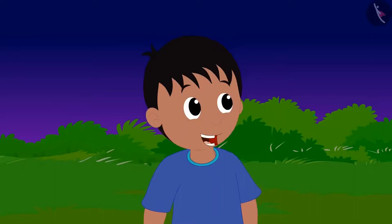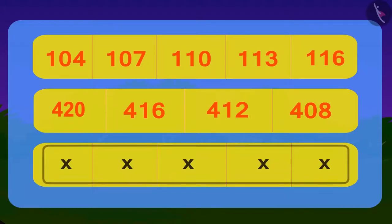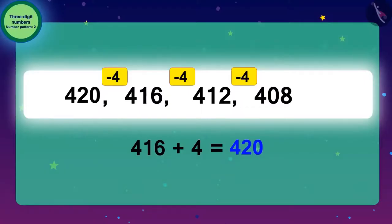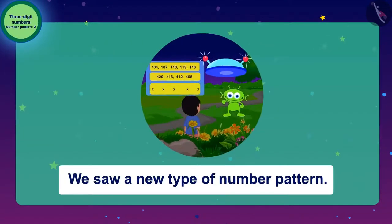Raju told the answer of the code to the alien, and the alien showed his third and last code. Children, today we saw a new type of number pattern. In the next video, we will try our best to save Bablu from the alien using our knowledge of number patterns.